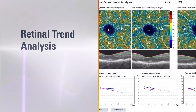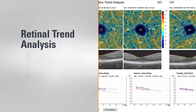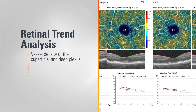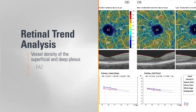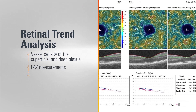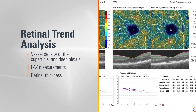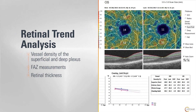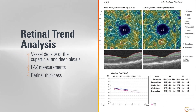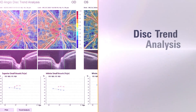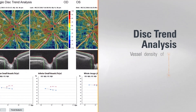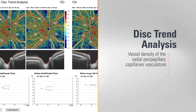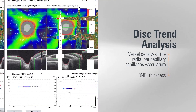Retina Trend Analysis tracks changes in the vessel density of the superficial and deep plexus, FAZ measurements, and retinal thickness, to aid in the assessment of microvascular diseases like diabetic retinopathy. Disc Trend Analysis tracks changes in the vessel density of the RPC and RNFL thickness.